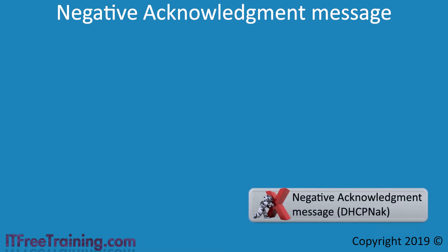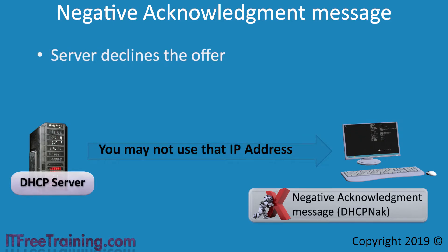The next message type is the Negative Acknowledgement message. This message tells the device that it cannot use that IP address. This could happen if the device is trying to use an IP address that the DHCP server has allocated to a different device. The process of configuring a device's networking using DHCP takes microseconds, so Negative Acknowledgement messages should be very rare. However, if this were to occur, the device would start the DHCP process from the beginning and try again.